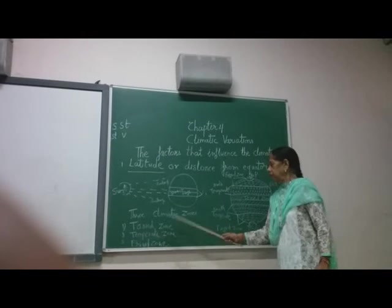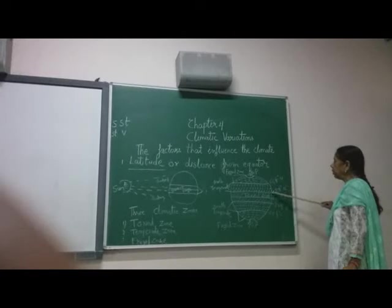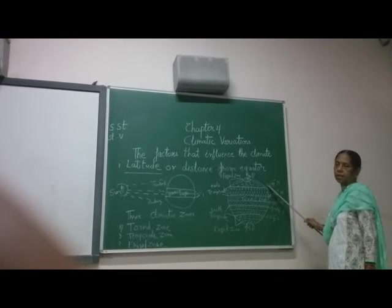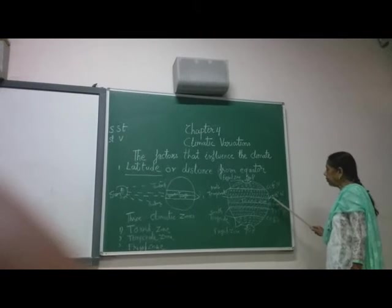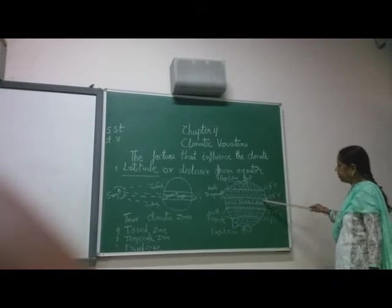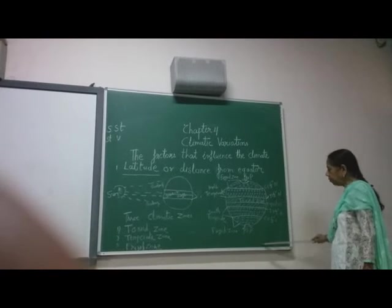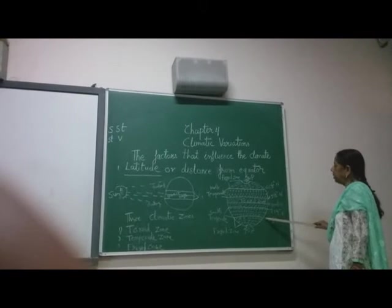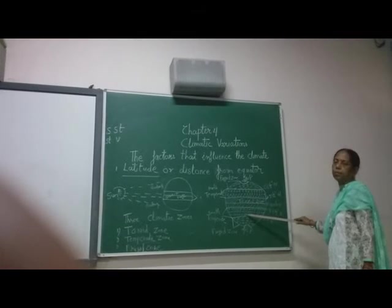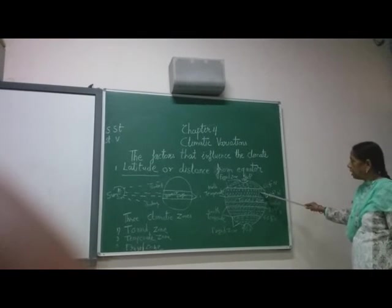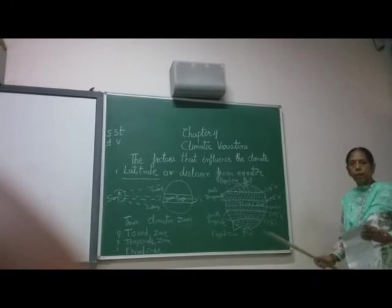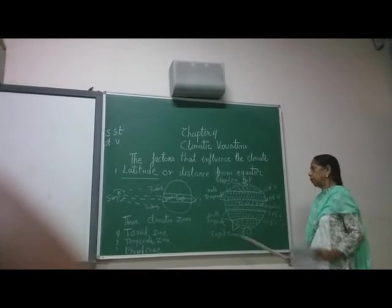Number two is the temperate zone. The temperate zone extends from 23 and a half degrees to 66 and a half degrees north — that is, from the Tropic of Cancer to the Arctic Circle — and similarly from the Tropic of Capricorn to the Antarctic Circle in the south. The upper portion is known as the North Temperate Zone and the lower portion is known as the South Temperate Zone.